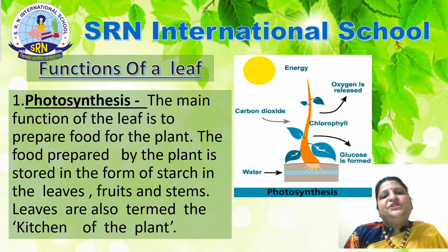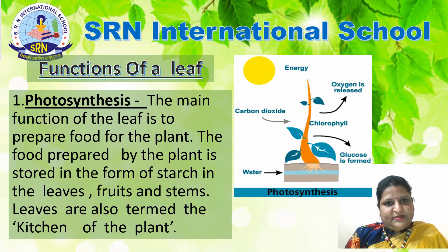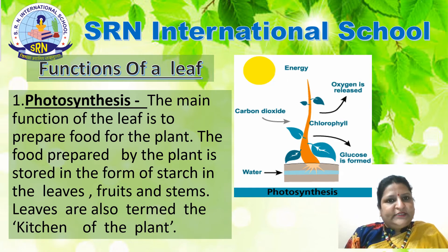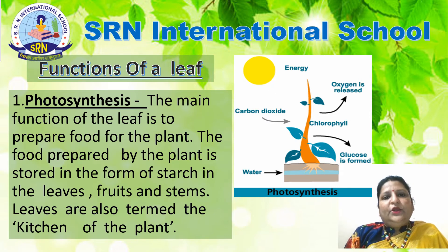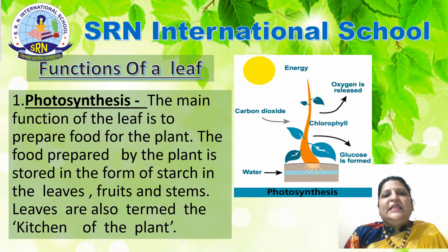Next, functions of a leaf. Photosynthesis: the main function of the leaf is to prepare food for the plant by the process of photosynthesis. The green leaves of a plant use water and carbon dioxide to prepare food in the presence of sunlight and chlorophyll. During the process, oxygen is released as a byproduct. The food prepared by the plant is stored in the form of starch in the leaves, fruits and stems. Leaves are termed as the kitchen of the plant.